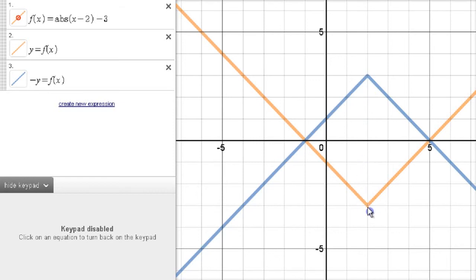This vertex of this absolute value function we had is now at the top. This entire piece that's below the axis is now above the axis. And each of these pieces that are above the axis are now below the axis. This is a vertical reflection.